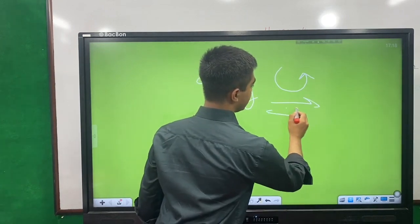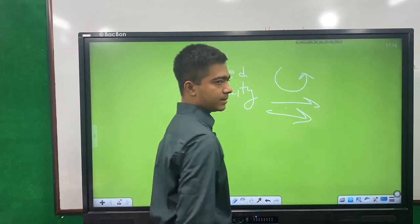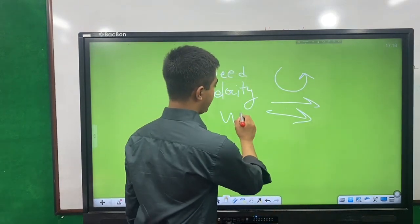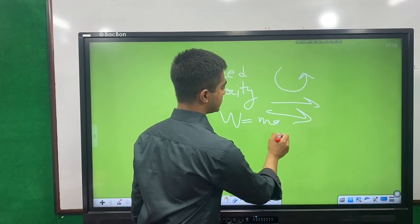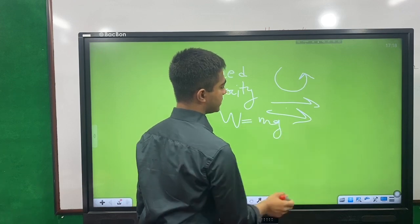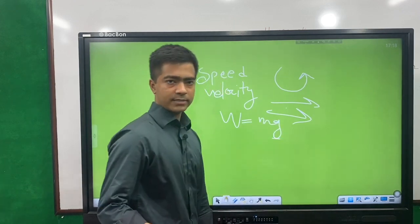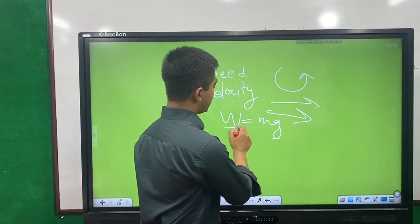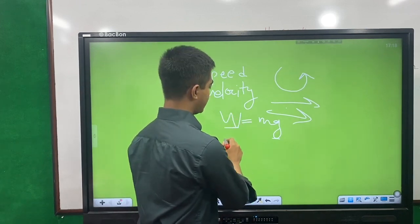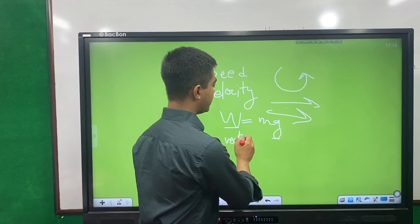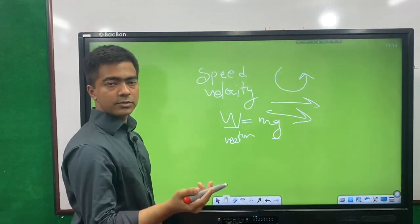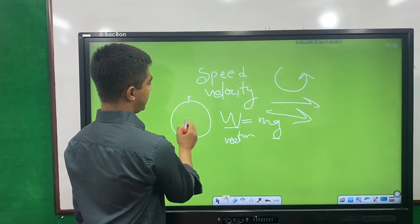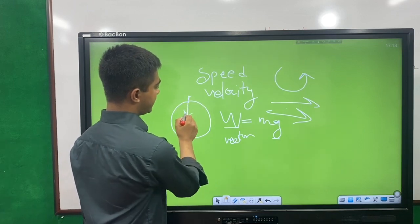Let me try to differentiate. Weight means mg — mass into g, where g is the acceleration due to gravitation. Weight, denoted W, is a vector quantity. Why? Because W has a direction.